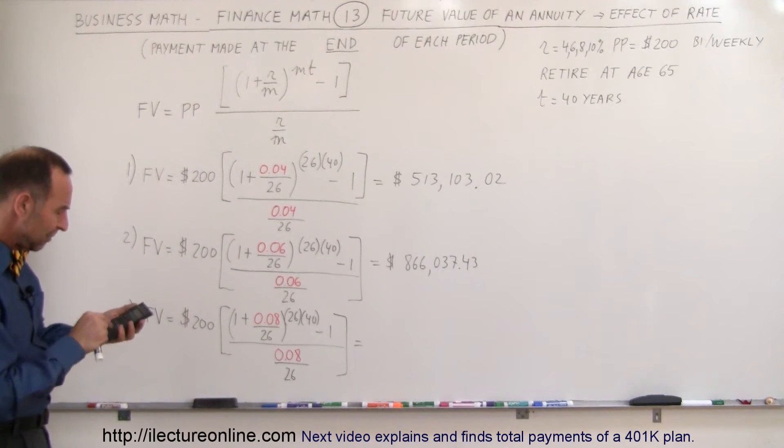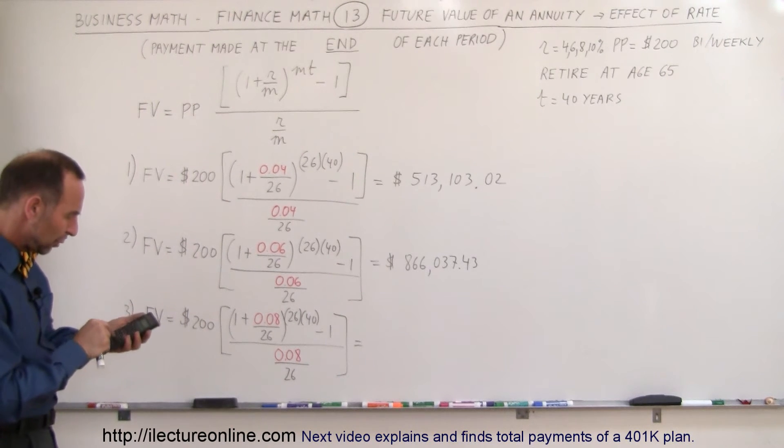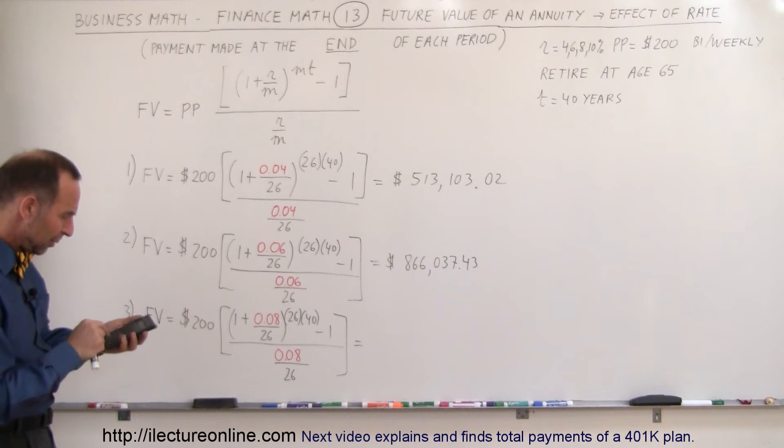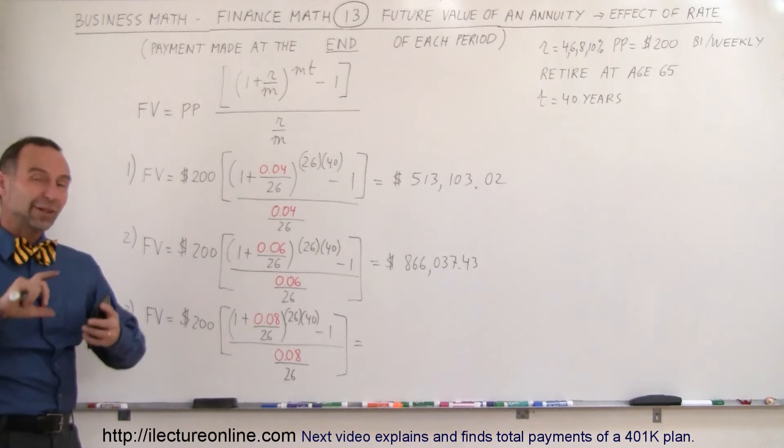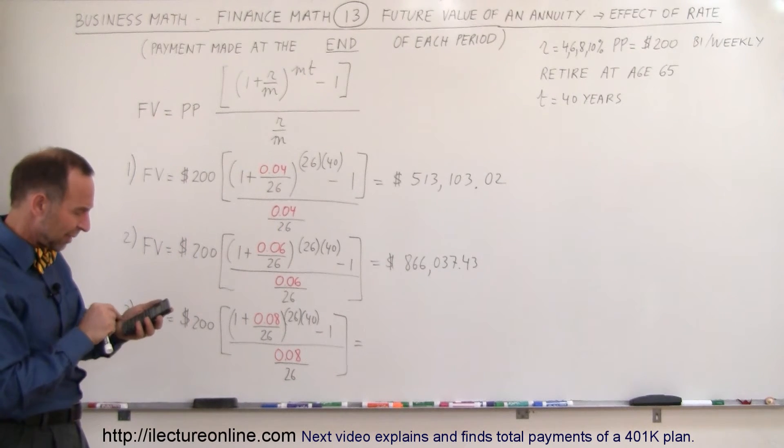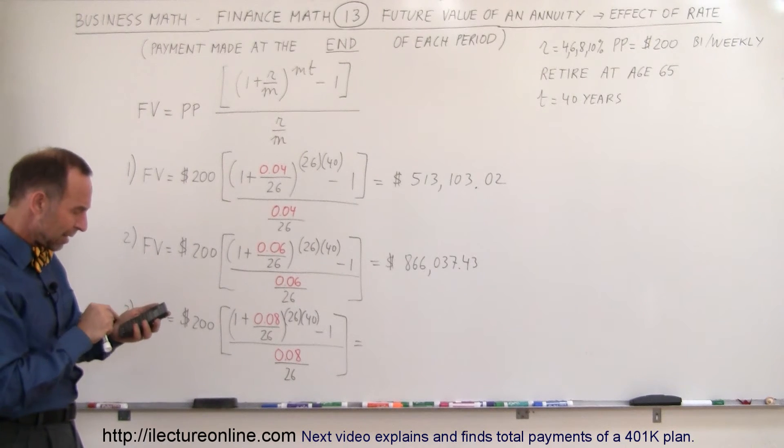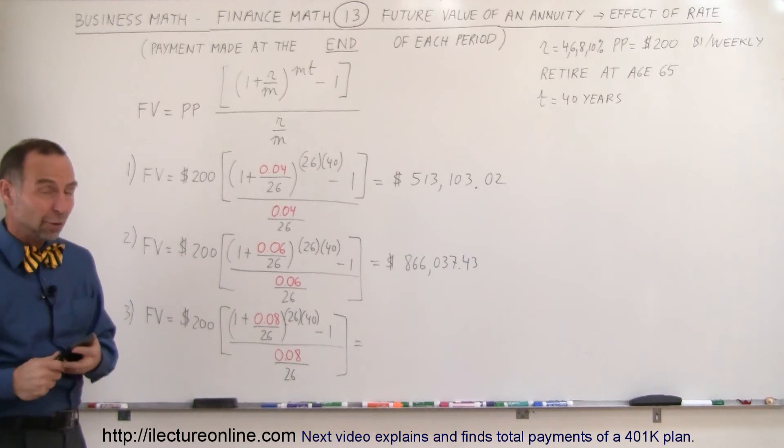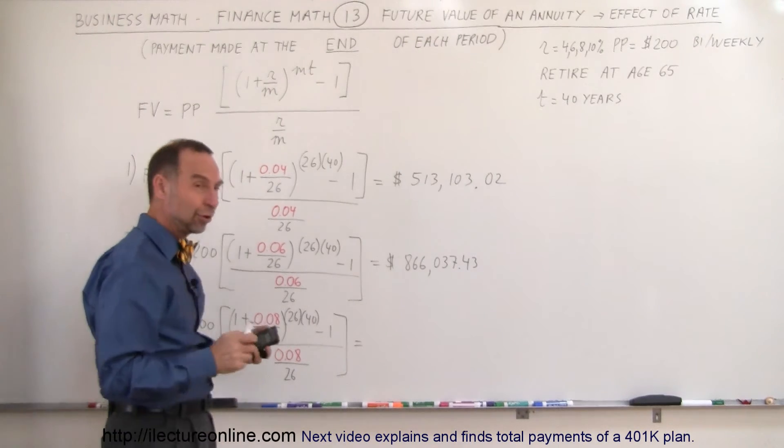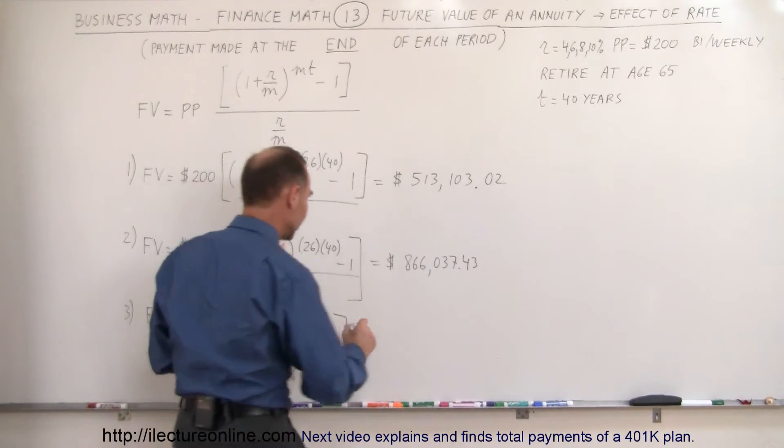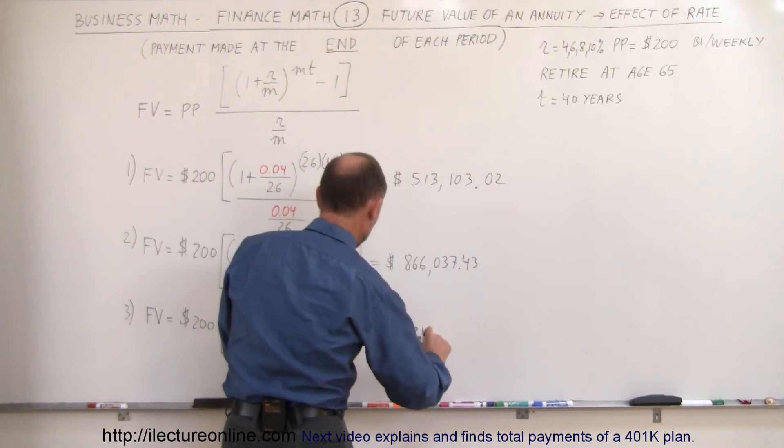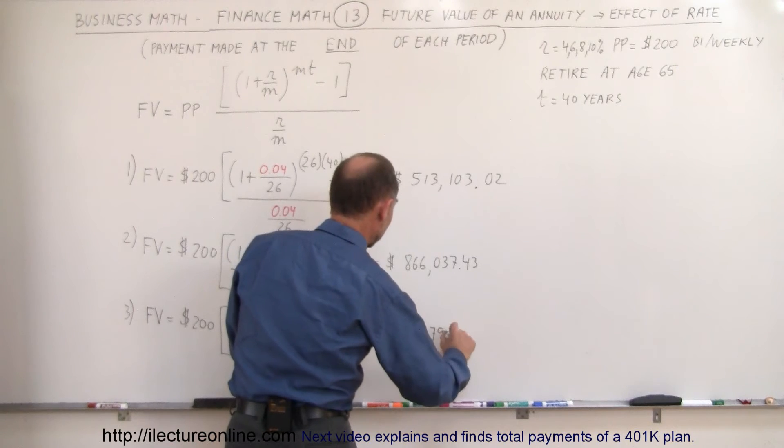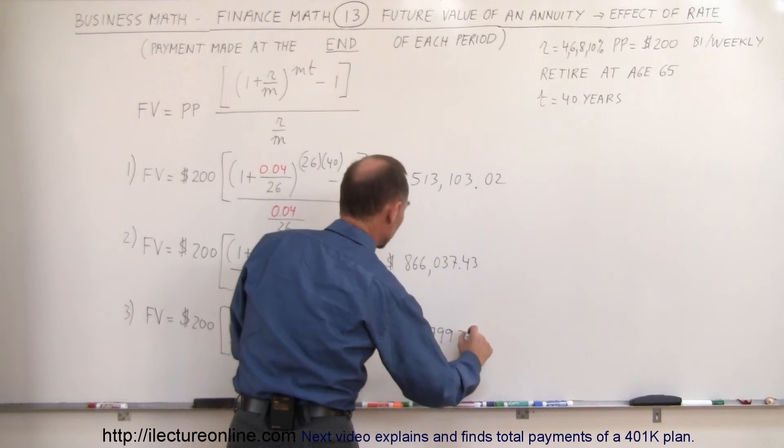So now we go 0.08 divided by 26 plus 1. Raise that to the 26 times 40 power. Subtract 1 from that, and then we divide that by 0.08 divided by 26. We multiply times the inverse, 26 divided by 0.08, and we multiply that times 200. So if you could earn 8% for 40 years, and put in just $200 per week aside from your paycheck, you would have in the bank $1,521,799.32.